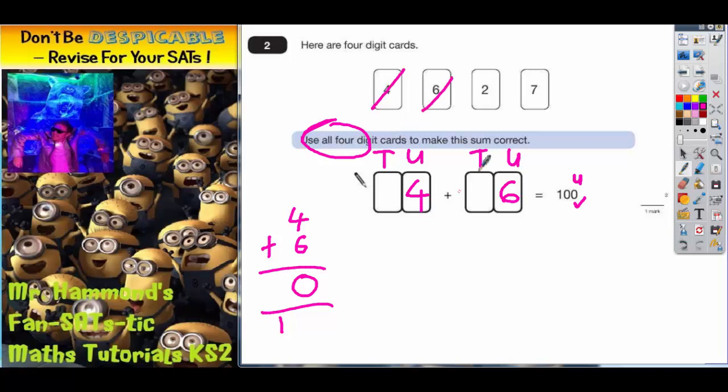Now we've only got two digits left to choose from. We've got a 2 and a 7. So which way round do they go? Is it 24 add 76 or is it 74 add 26? Well, let's just double check.